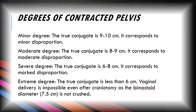The degrees of contracted pelvis are categorized into minor, moderate, severe, and extreme degree. In minor degree, the true conjugate is 9 to 10 cm, corresponding to minor disproportion. Moderate degree: true conjugate is 8 to 9 cm, corresponding to moderate disproportion. Severe degree: true conjugate is 6 to 8 cm, corresponding to marked disproportion. Extreme degree: true conjugate is less than 6 cm, and vaginal delivery is impossible even after craniotomy as the bimastoid diameter cannot be crushed.